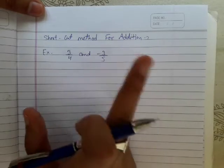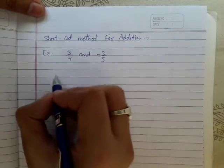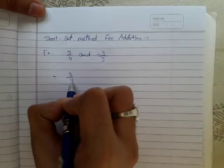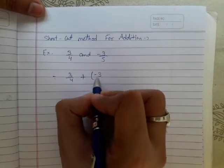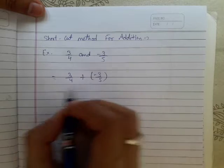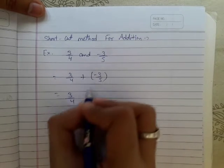First we will take LCM. We have to add 3/4 and -3/5. First we will remove this bracket - it will become 3/4, and plus minus equals minus, so 3/4 - 3/5.